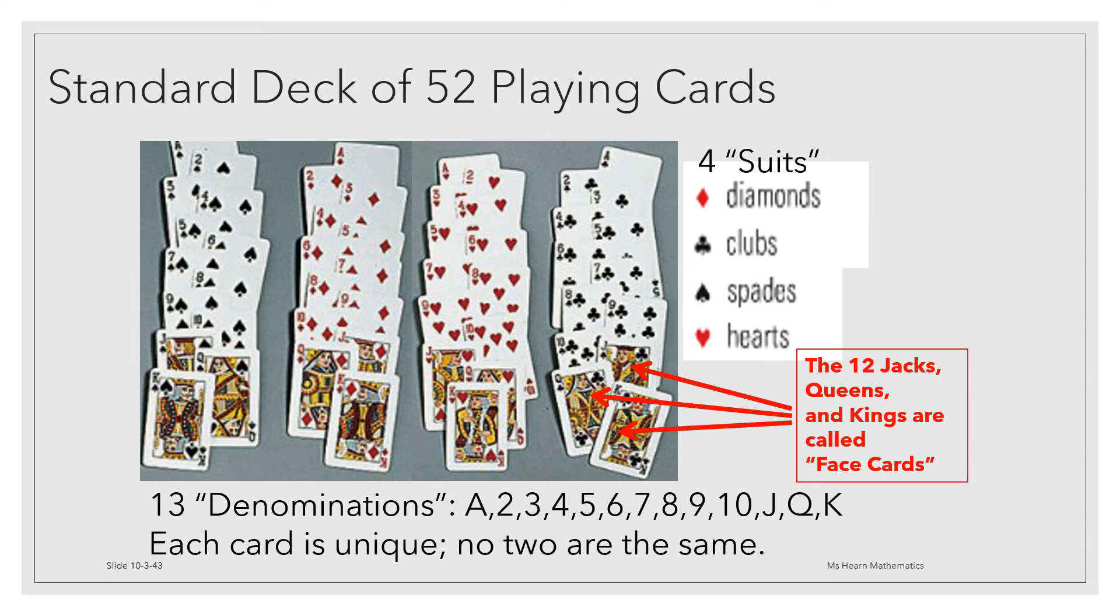Let's think about these ideas in the context of a standard deck of 52 playing cards. Remember, in a standard deck of 52 playing cards, there are four suits: diamonds, clubs, spades, and hearts. There are 13 values in each suit, ranging from ace up to king. These are called denominations. Each card is unique. No two are the same.